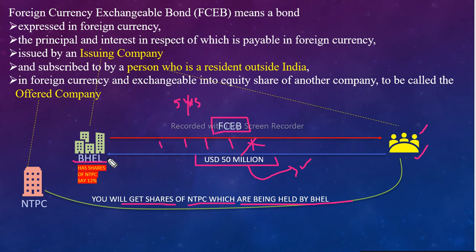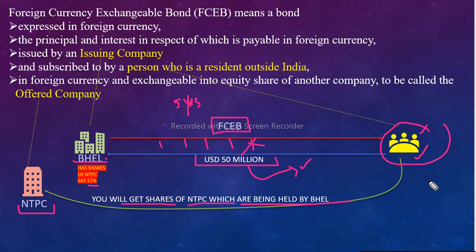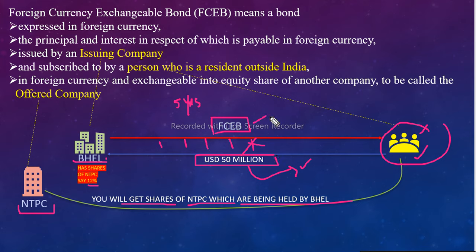Ya phir 50 million USD wapas na karte hue, aapke paas ek choice dete hain: you will get shares of NTPC which are being held by BHEL. BHEL ke paas NTPC ke shares pade hain — jaise aapke paas bhi kisi company ke shares hote hain. Maturity date par ya to aap 50 million USD wapas le lo, ya NTPC ke shares le lo. Agar 5th year end mein NTPC ke shares ki market value kaafi achhi hai, to foreign investors NTPC ke shares le lenge. Isi prakar ke arrangement ko hum kehte hain Foreign Currency Exchangeable Bond.